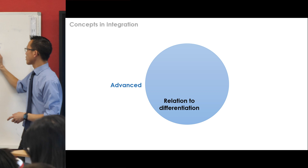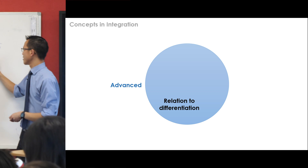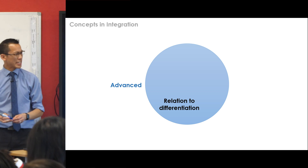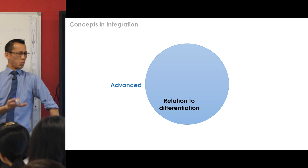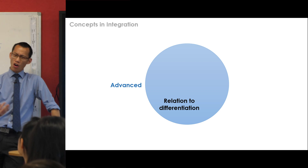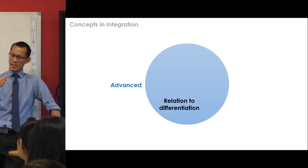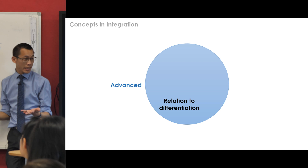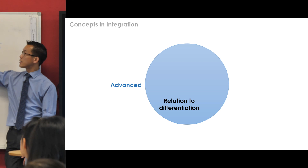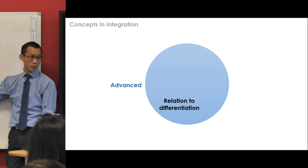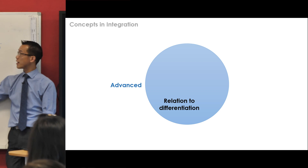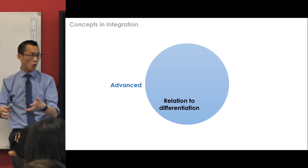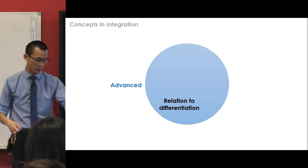I remember the first time I was introduced to the idea that area is the opposite of gradient — geometrically, that's weird. Why should the opposite of gradient be area? But when I saw this framing, I got it: single point in time versus interval of time — rate compared to what happens when you add up over a whole interval.